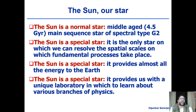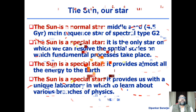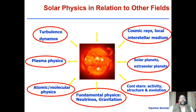Our existence is because of the sun at an appropriate distance away from us. The sun is also a very special star because it provides us with a unique laboratory in which to learn about various branches of physics. I am targeting undergraduate or early postgraduate students who are primarily studying physics. What we do in astrophysics is nothing but different branches of physics applied. I'd like to give the essence of what different branches of physics you can apply while studying solar physics.